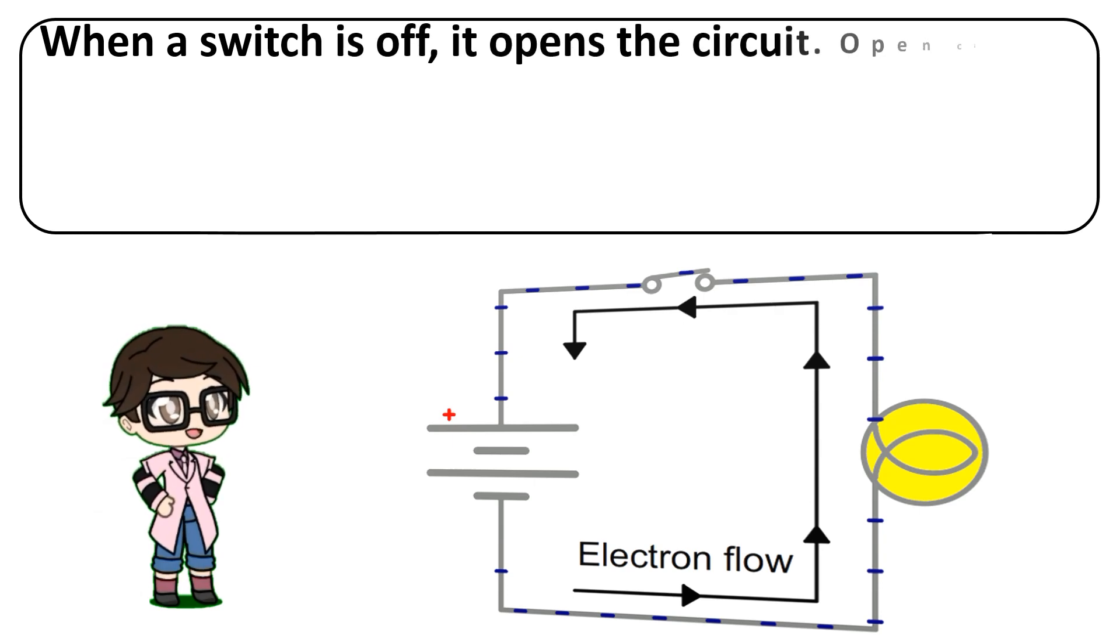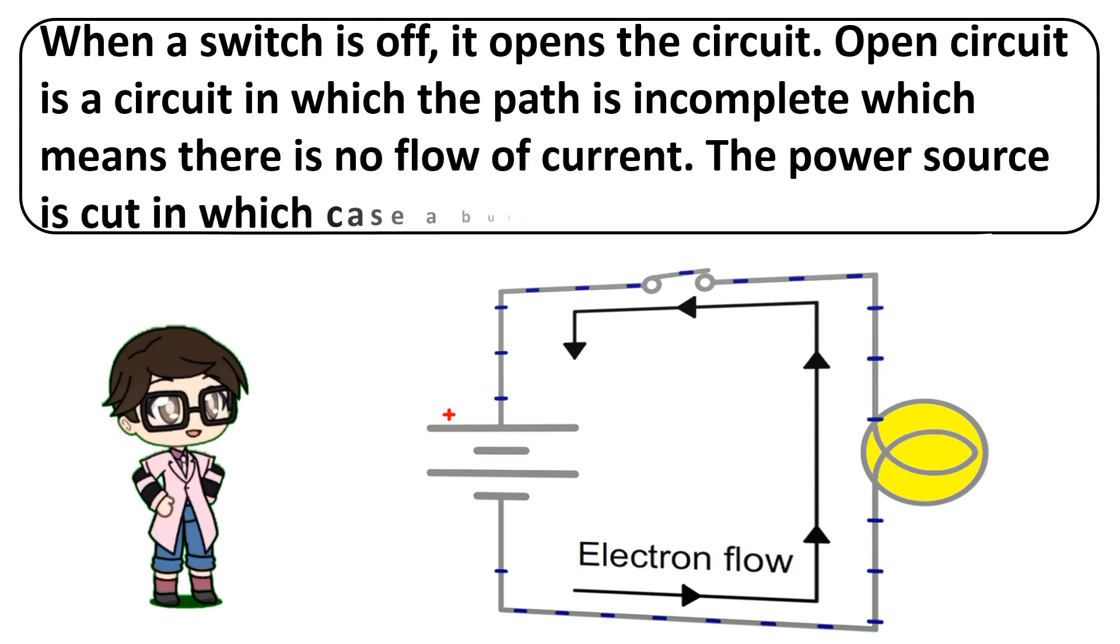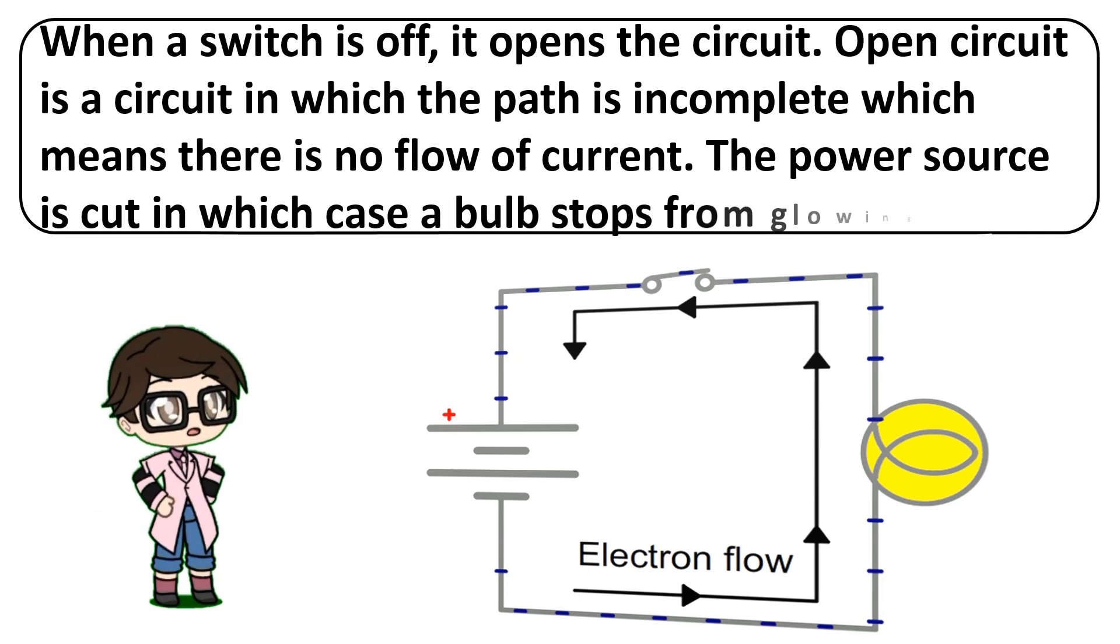Open circuit is a circuit in which the path is incomplete, which means there is no flow of current. The power source is cut, in which case a bulb stops from glowing.